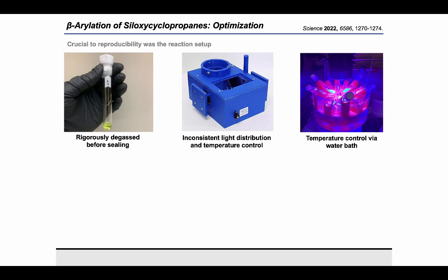Our original conditions used a setup where the light is held next to the reactions and a fan is used to control the temperature. However, this led to inconsistent cooling and variable light distribution from reaction to reaction, which we believe negatively impacted reproducibility, resulting in highly variable yields. Switching to the setup seen on the far right improved reproducibility and allowed for temperature control via water bath. The red plastic reaction holder was 3D-printed and gifted to us by the Jewi lab, which allowed us to set up six reactions with almost identical environments in terms of temperature and light exposure.